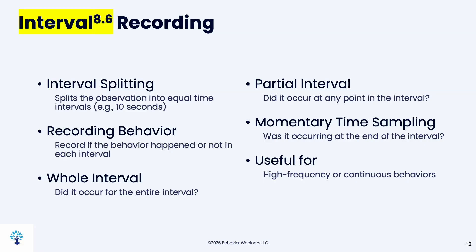Whatever you do during the FBA process, you must continue during therapy. If you use partial interval during baseline showing the behavior occurs 50% of intervals and then switch to a frequency count during intervention, you can't compare those two numbers. You must keep your data collection the same throughout baseline and therapy.